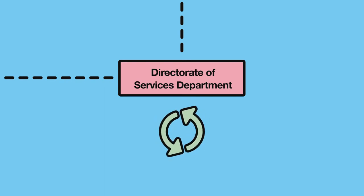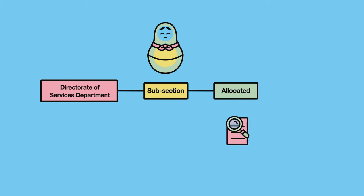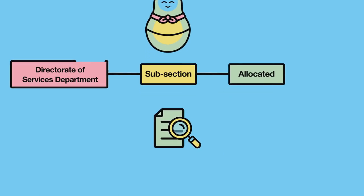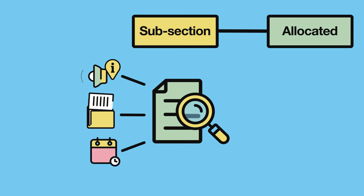It also assigns one management or directorate of services department with the task of guaranteeing the veracity and integrity of the information contained within a subsection, as well as maintaining it up to date. The management or directorate of services responsible for an allocated subsection may issue a maintenance or update memo that sets out the reach of the public information that must be published, the role of the entity's organisational units, and the process and timeframe for publication.